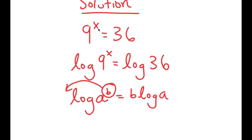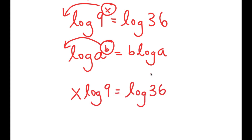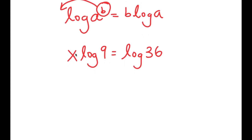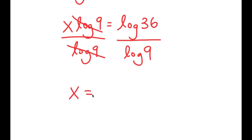Before, x was an exponent, and it was almost impossible to solve the equation in that form. But now we can move x to the front and it becomes much easier to solve. So now I get x times log 9 is equal to log 36. To isolate x, I'm going to divide both sides by log 9, so these two cancel out, and I get x is equal to log 36 over log 9.